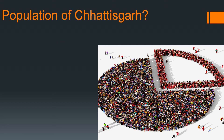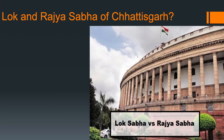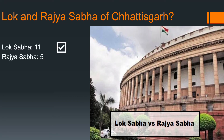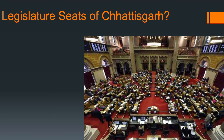Next: what is the population of Chhattisgarh? Answer: 2.94 Crore, ranking 17th in India. Next: how many Lok Sabha and Rajya Sabha seats does Chhattisgarh have? Lok Sabha: 11 seats, Rajya Sabha: 5 seats.